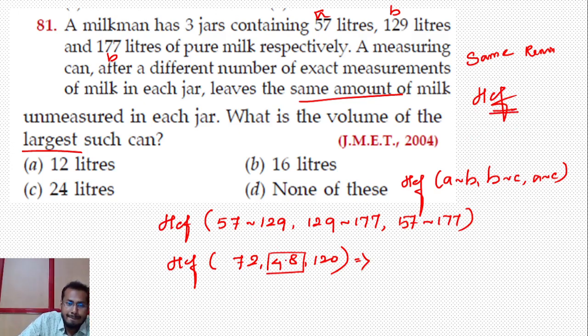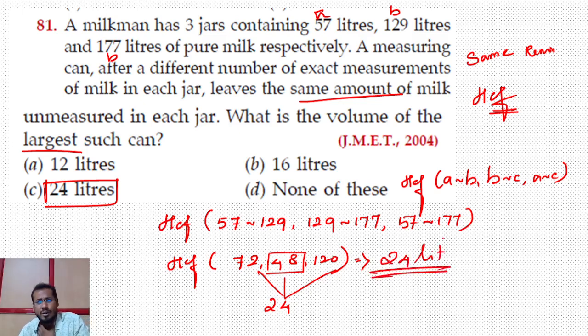So HCF of (57 - 129), (129 - 177), (57 - 177) equals HCF of 72, 48, and 120. The minimum number here is 48, so the answer will be 48 or less. Checking 24: it divides all three numbers. So 24 liters is the right answer.